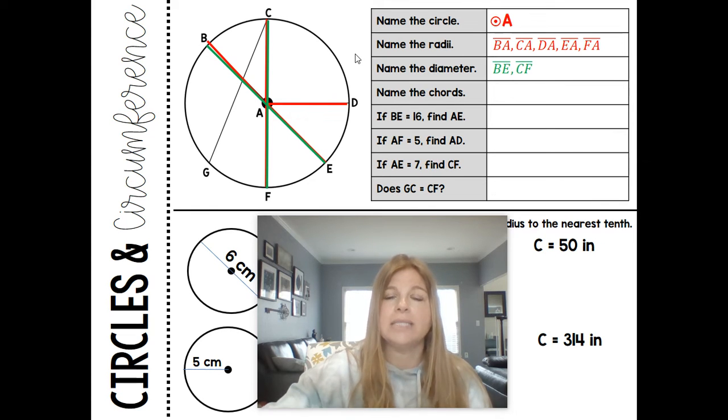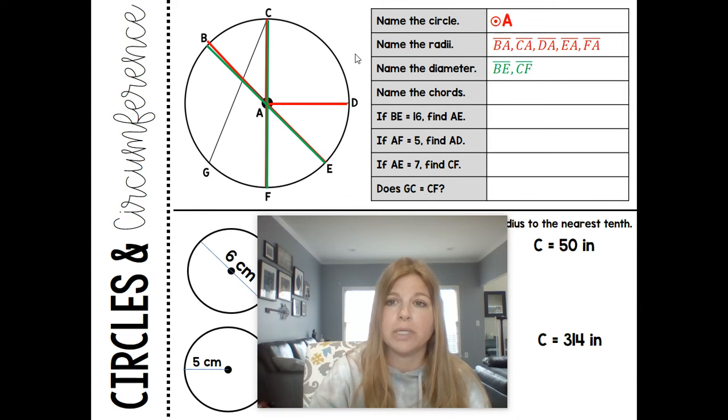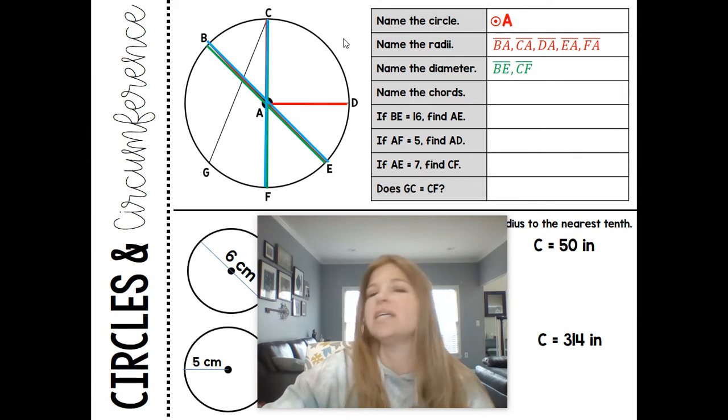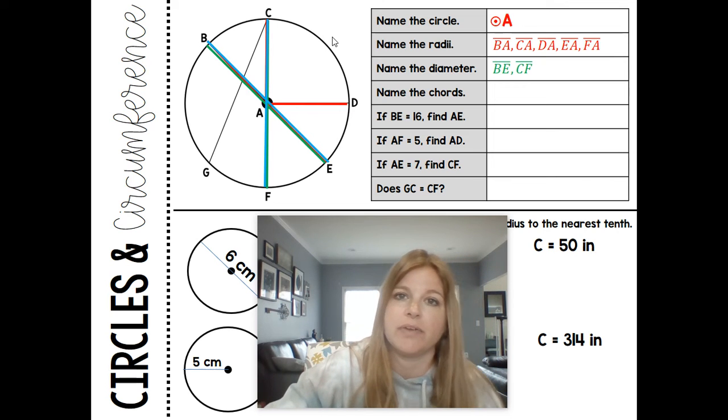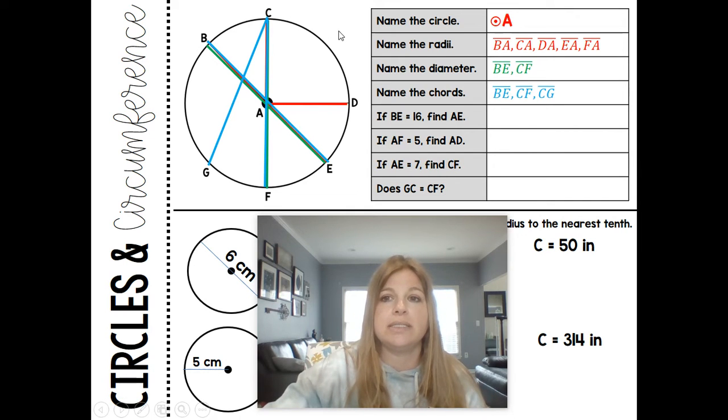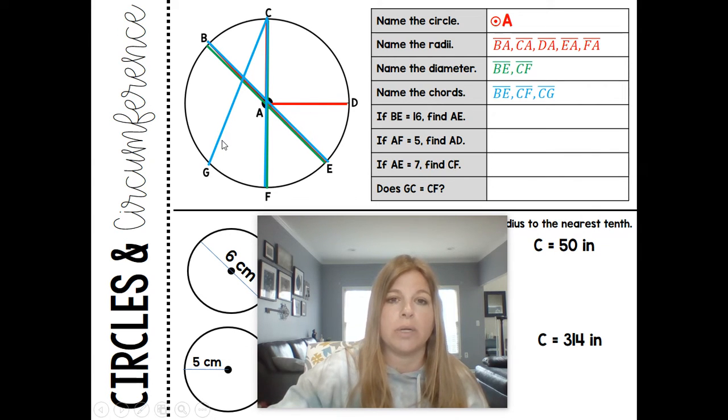Now chords. A diameter is a special type of chord. So both of those are definitely chords, BE and CF, but a chord doesn't need to go through the center. If it goes through the center, it's a diameter. So do you see another chord here? You should. It's CG. So we actually have three chords, and I put them all in blue. The two diameters are chords, and then this is also a chord here.